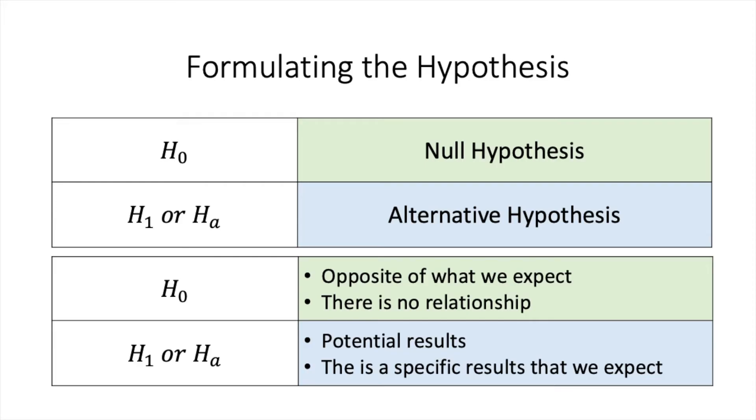So what is the idea here? Usually, the idea or the proposition that we want to test is the H1. Our concentration is on H1. This is the potential result that we are expecting. We are expecting to find out a relationship and there is a specific result that we expect.